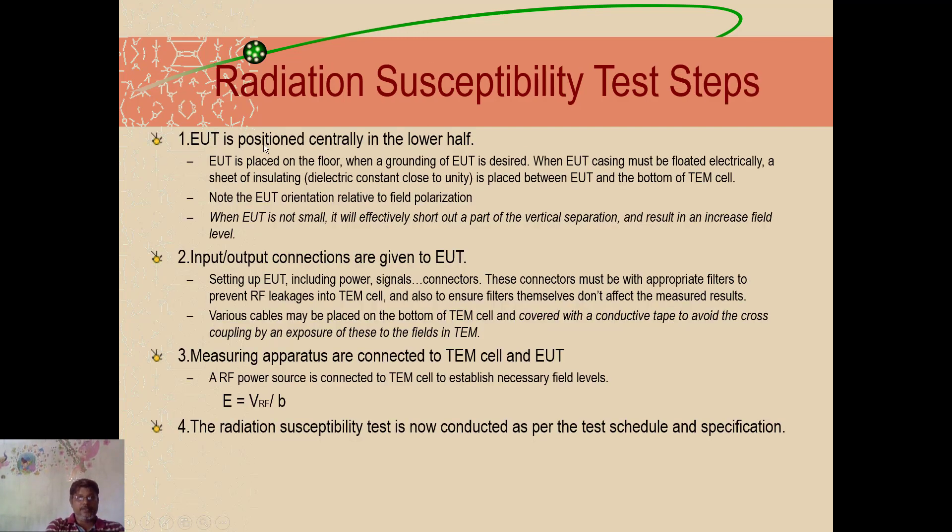The steps are given very clearly here. First is, equipment is positioned centrally in the lower half. And the input-output connections are given to equipment and appropriate measuring operators are connected to TEM cell and EUT. And you measure the voltage which has been exposed to this, where it will be equal to E equals VERF by b. Then, the radiation susceptibility test is now conducted as per the test schedule and specifications. Then, you can compare and give your specifications.